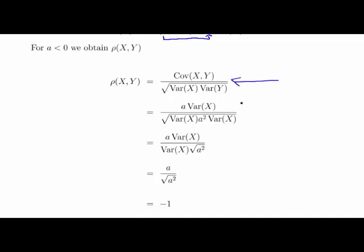And this is where we're going to pick up. So the covariance of X and Y can be written as a times the variance of X. Variance of X we leave alone. And the variance of Y becomes a squared times the variance of X.